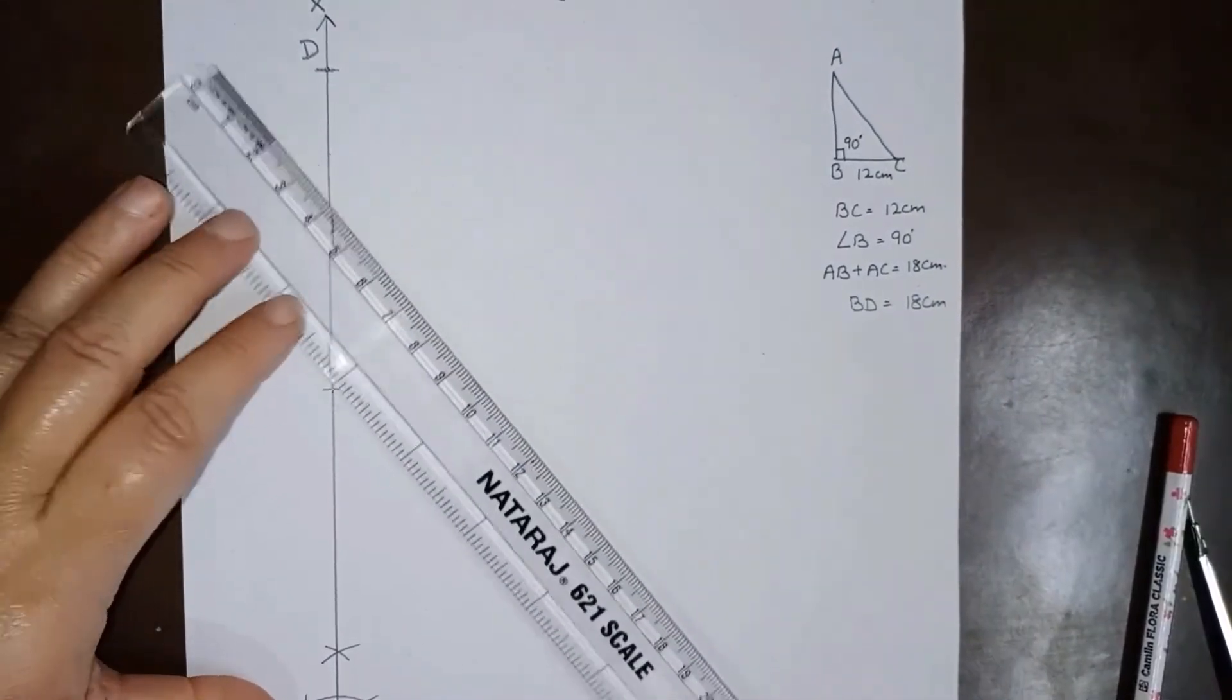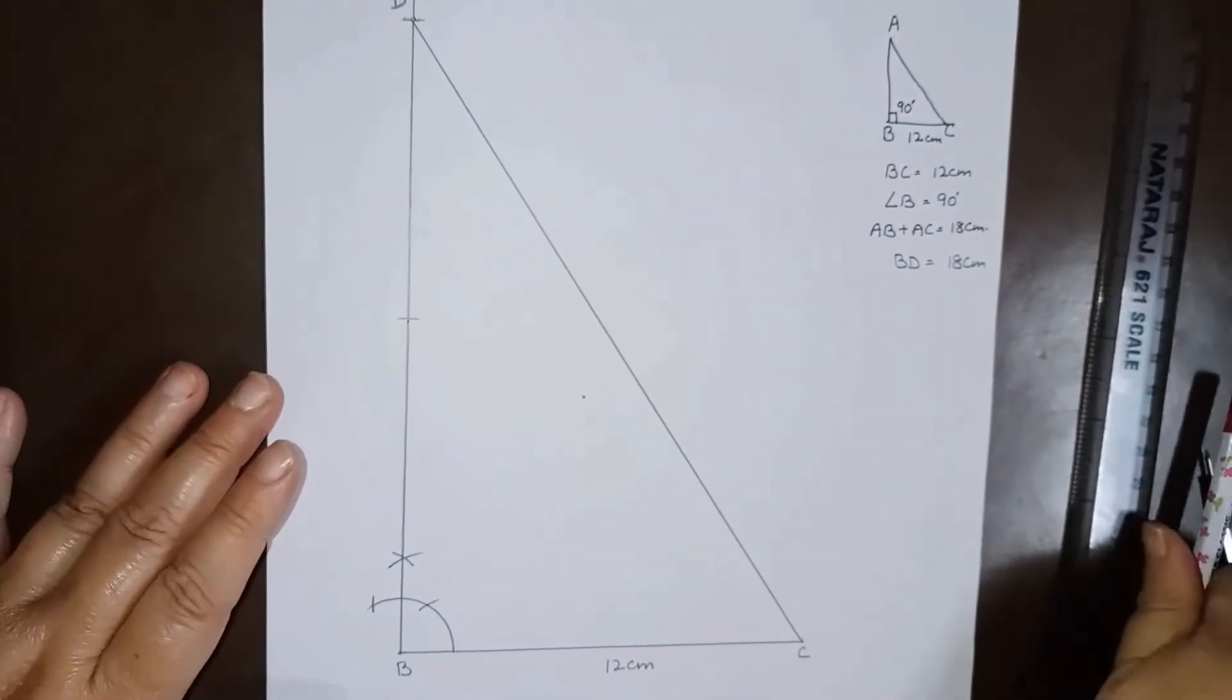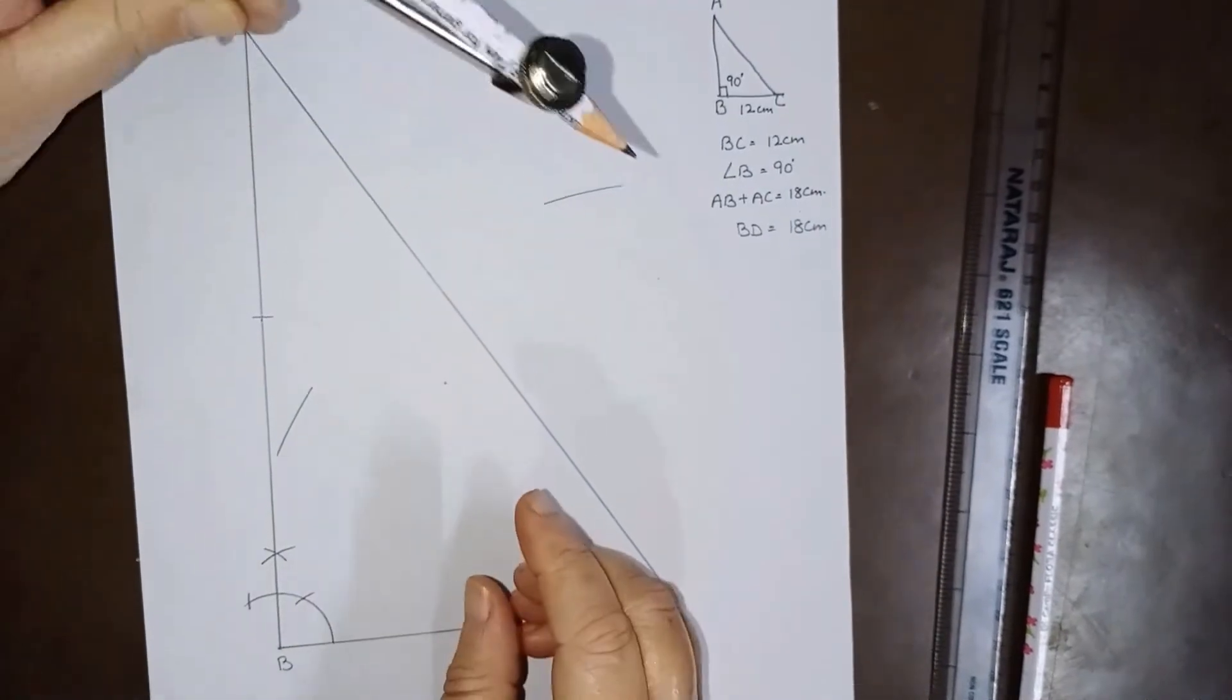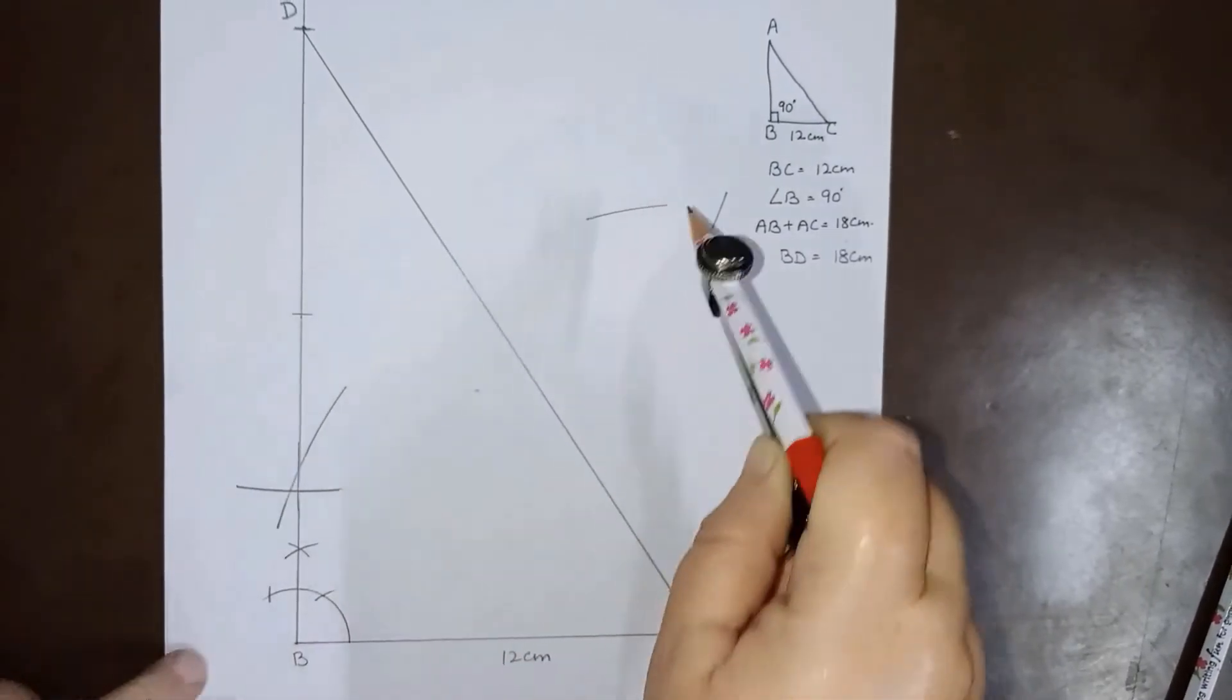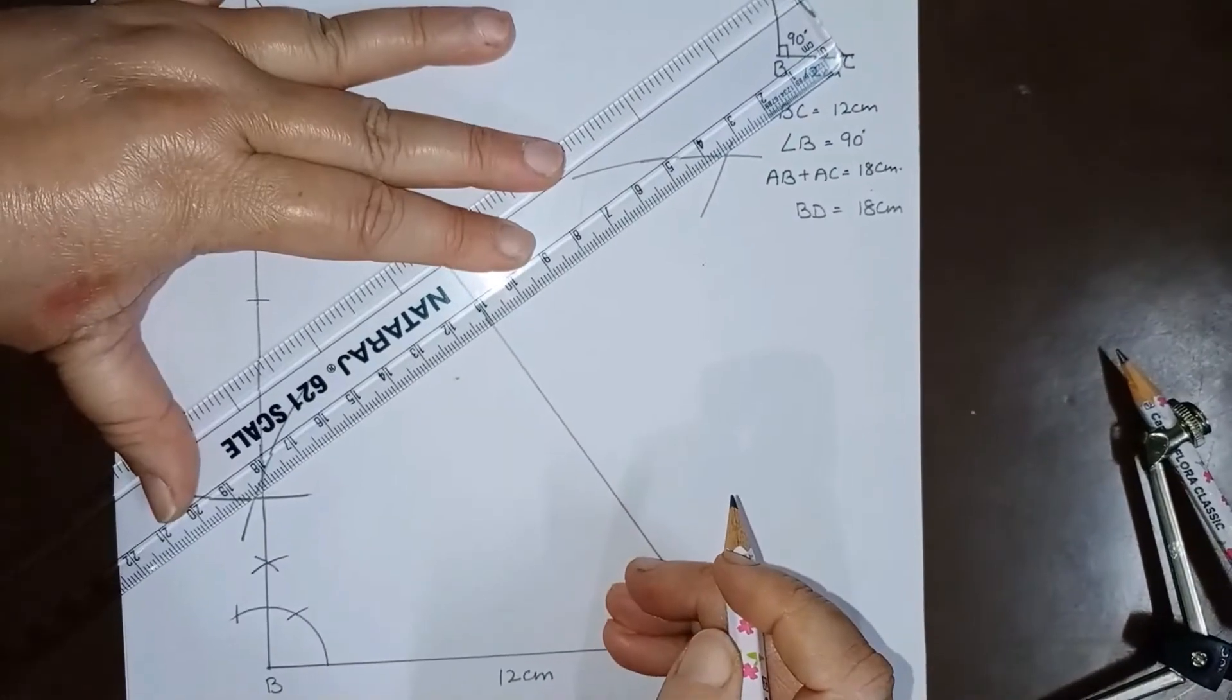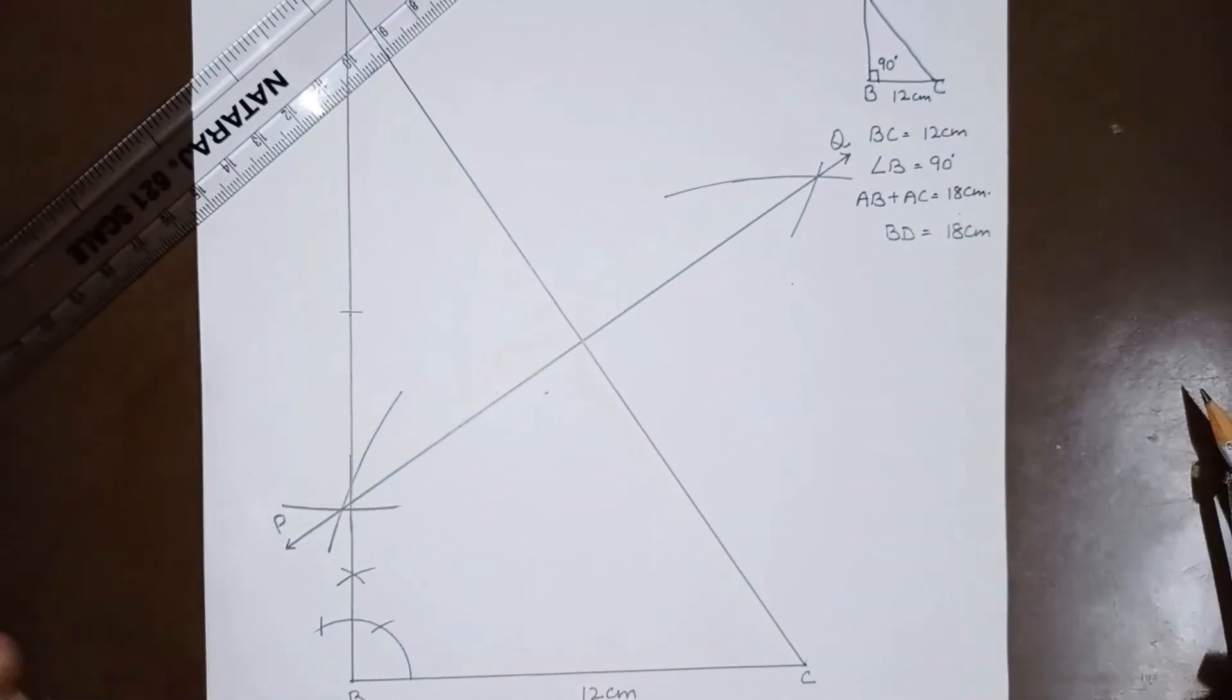Now, the next step will be we will join this DC. Let us join DC. It will be like this. And now we have to draw perpendicular bisector of this DC. From point C, we will mark two arcs, one here, one here. And then from point D, we will mark two arcs to cut the previous. I can again do it like this. PQ is the perpendicular bisector of DC. I can call this as P and this as Q. PQ is the perpendicular bisector of DC.